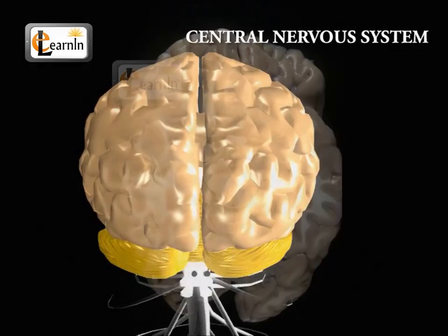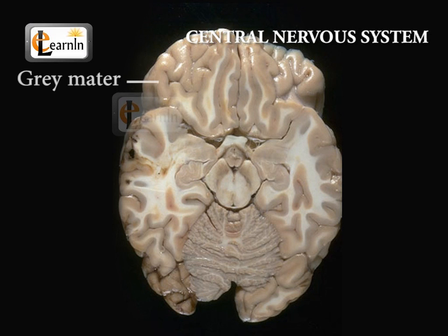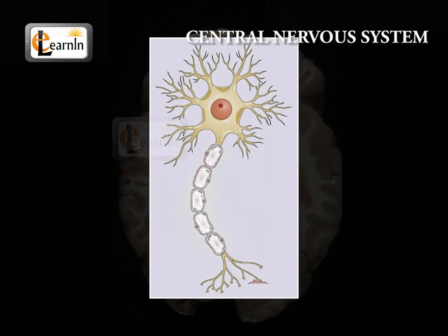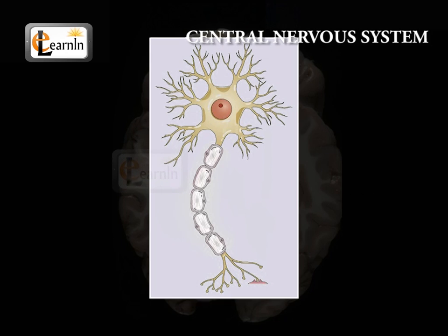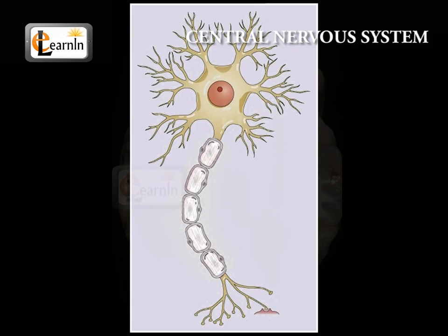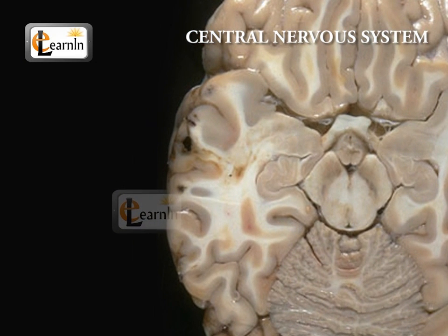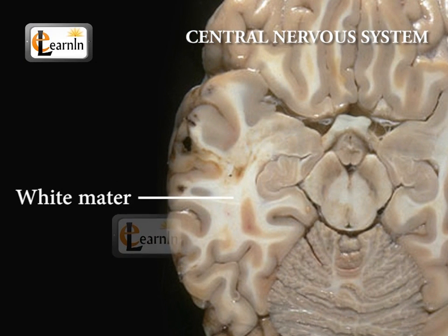The outer layers of the brain look gray in color. Hence, these regions of the brain are called the gray matter. The deeper layer of the brain has axon bodies present in the top layers. As most of these axon bodies are myelinated, they appear white in color and so this portion of the brain is called white matter.